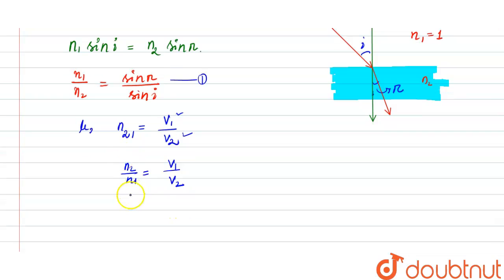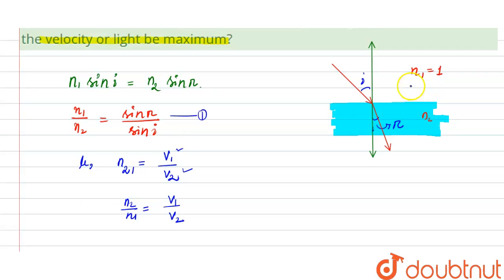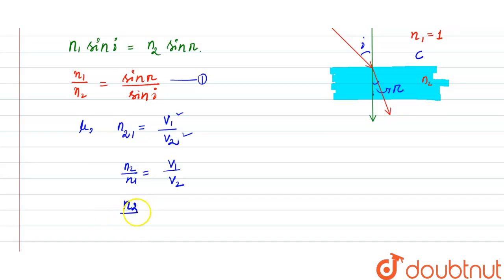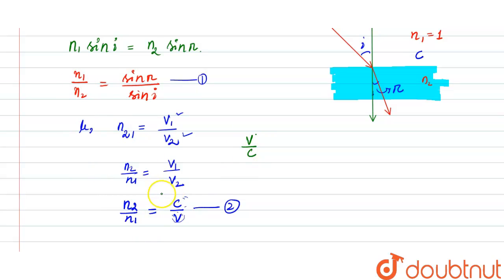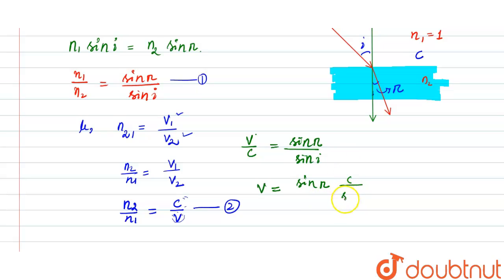So n2 divided by n1 equals v1 divided by v2. Now, if n1 is air, then the velocity in air is approximately c (speed of light in vacuum). So n2 divided by n1 equals c divided by v. Using equation 1 and equation 2 together, we get v divided by c equals sin r divided by sin i.